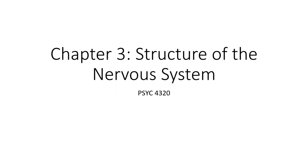Hello, all, and welcome back. In this lecture, we're going to talk about some material from chapter three in our text. In this chapter, we focus on the structure of the nervous system. First, let's take a look at the basic structure of both the central nervous system and the peripheral nervous system.